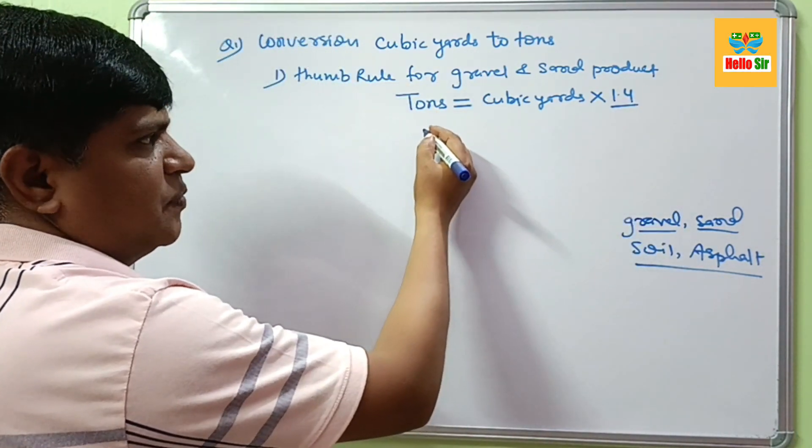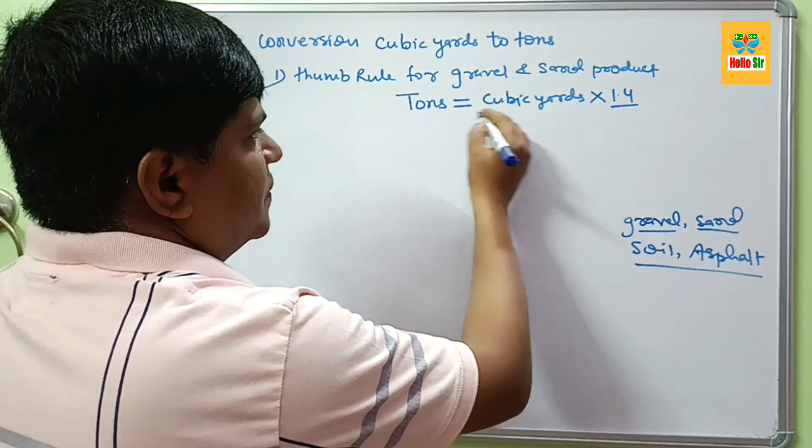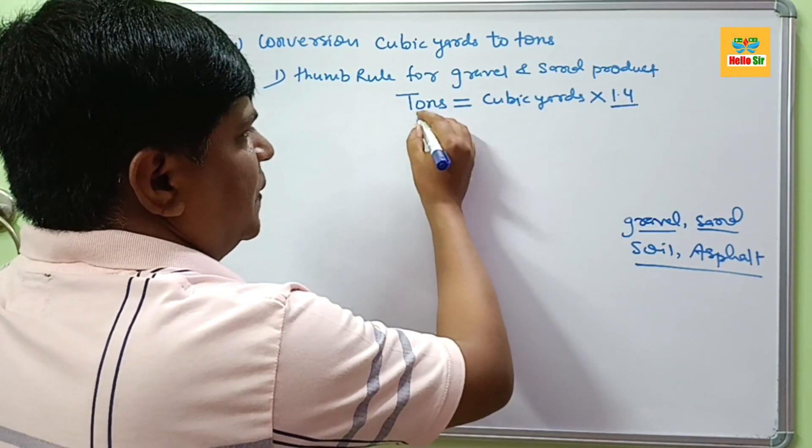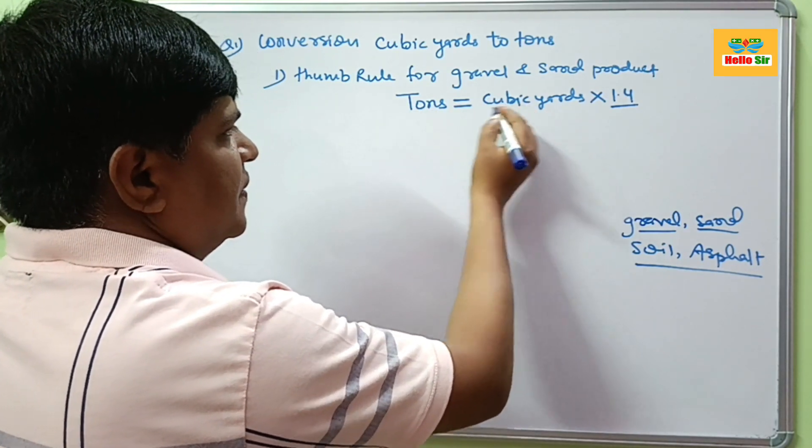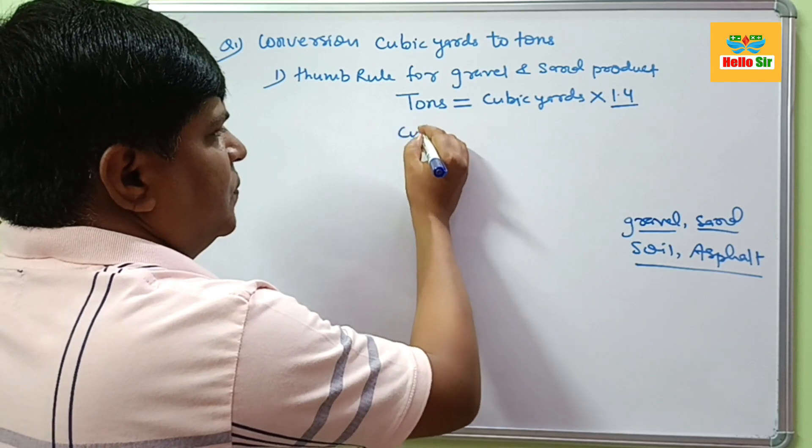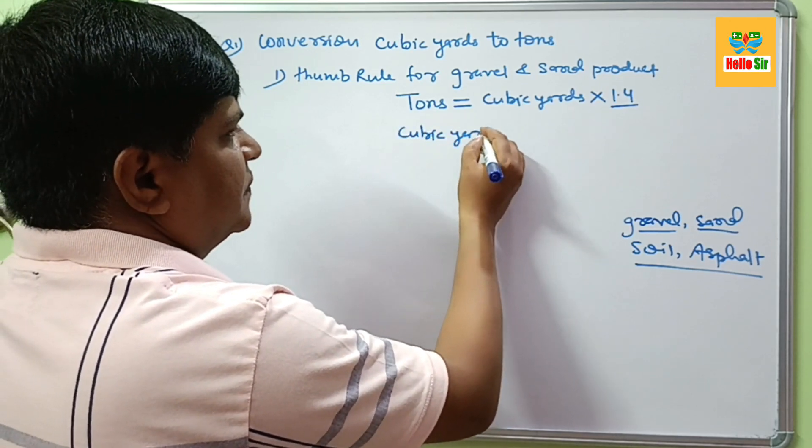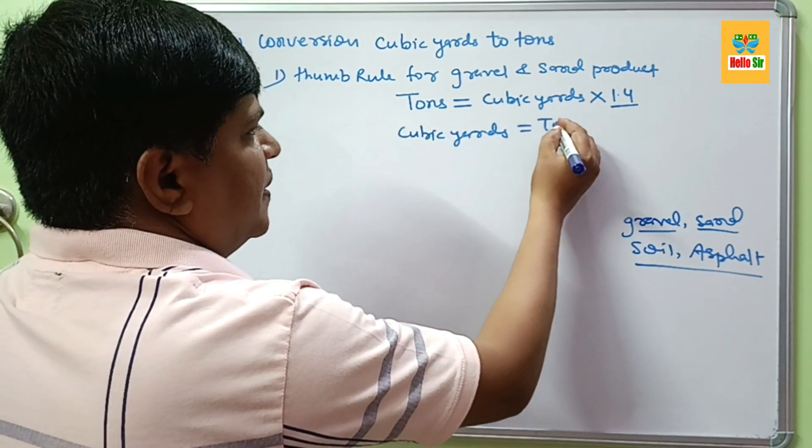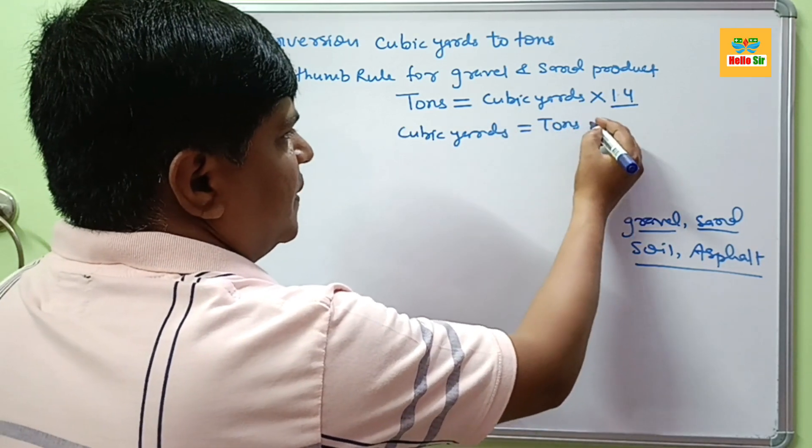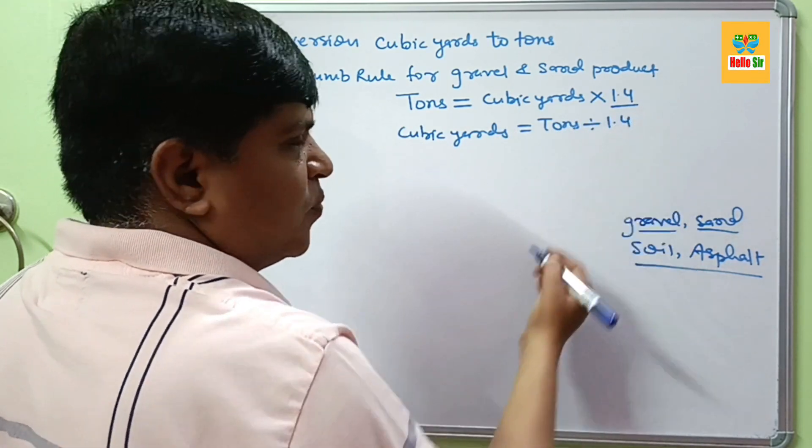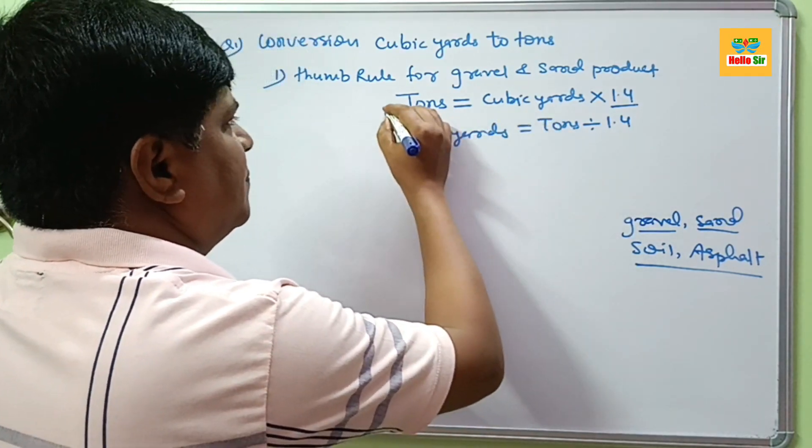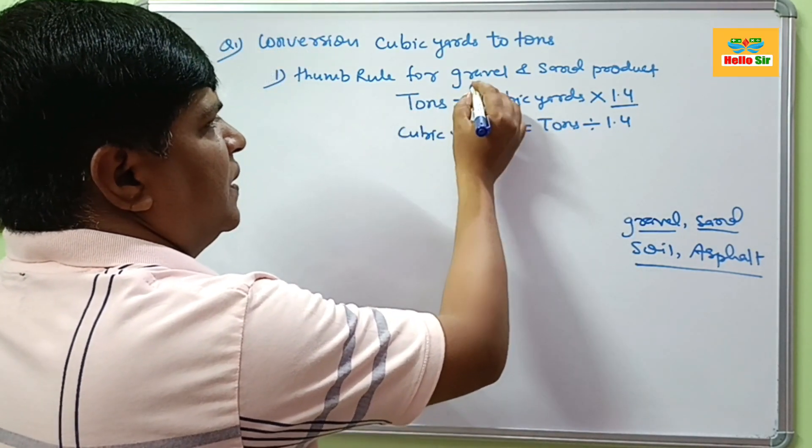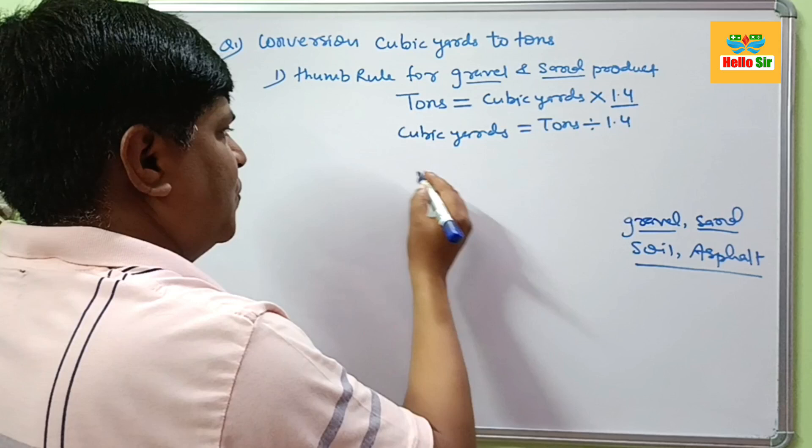And reverse this, if you want to convert tons to cubic yards. If you want to know the cubic yards, then tons of gravel divided by 1.4. And this conversion factor is used for only gravel and sand product.